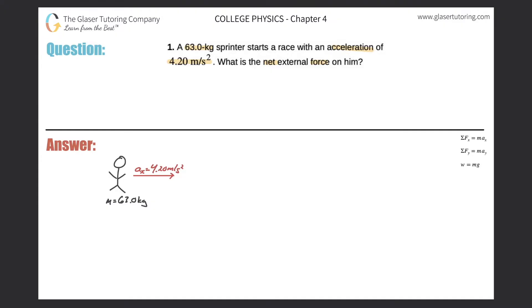All right, so here we have a little picture. Here's our sprinter and his mass is 63 kilograms and he's traveling, let's just say in the x direction with an acceleration of 4.2 meters per second squared.